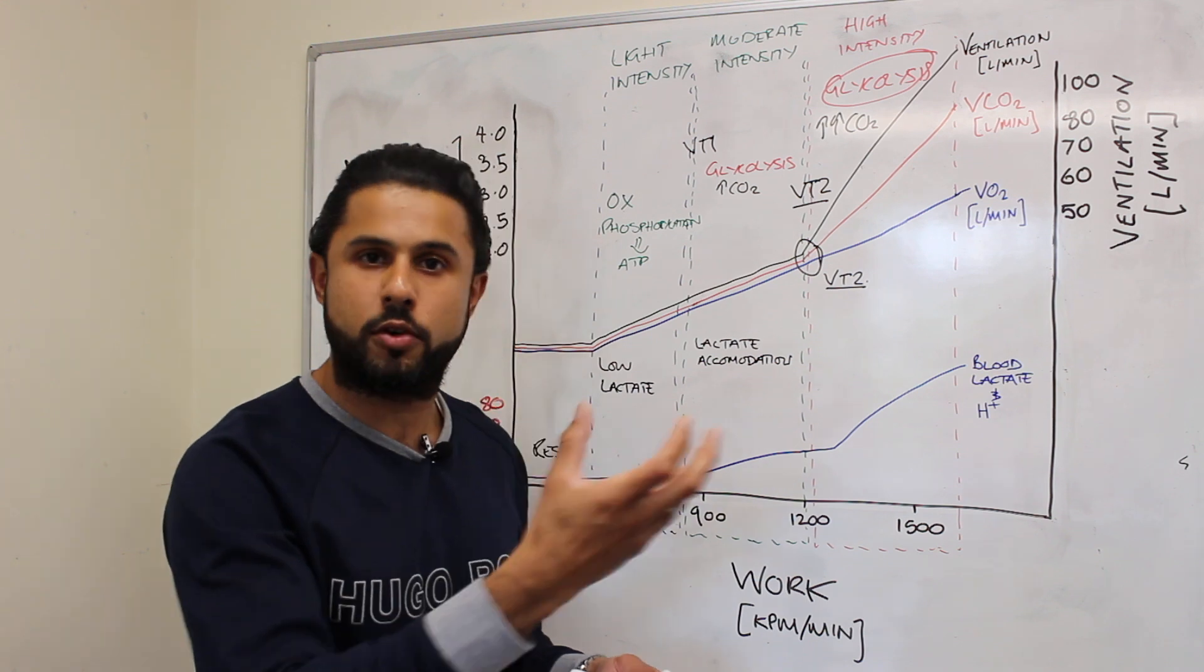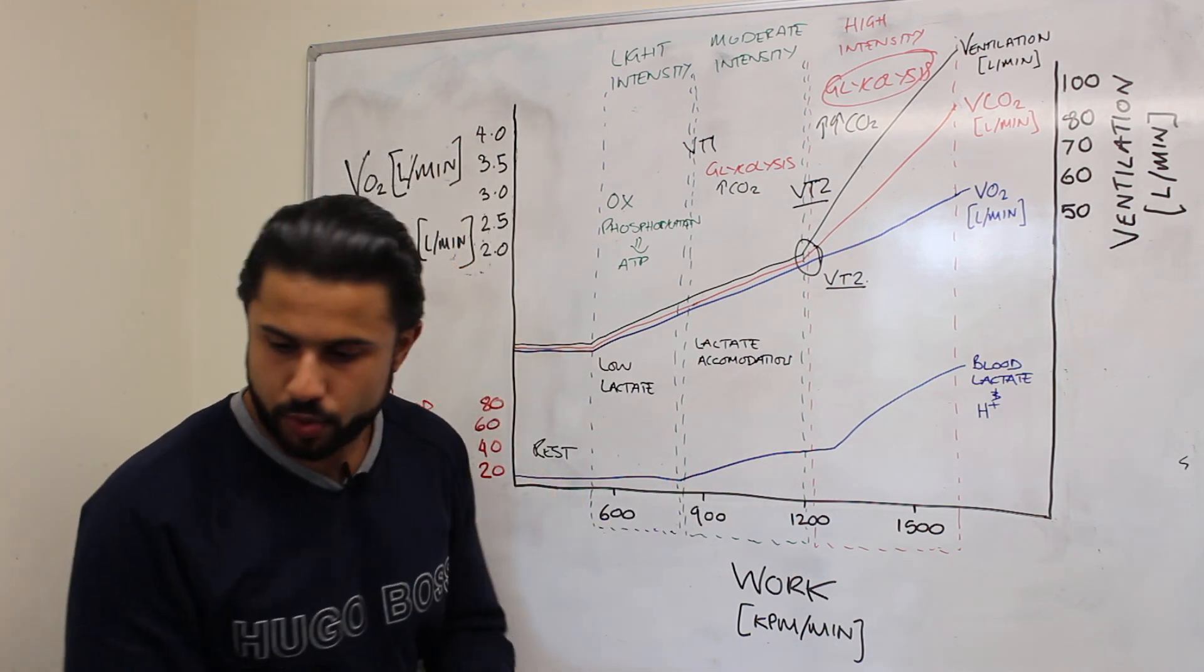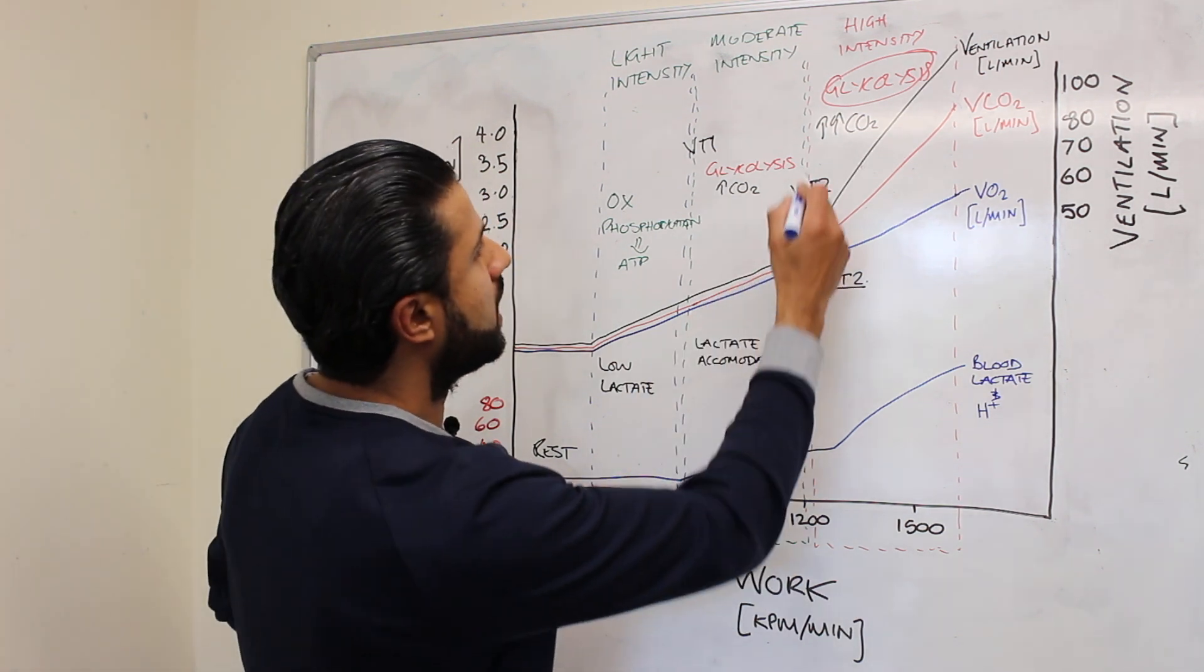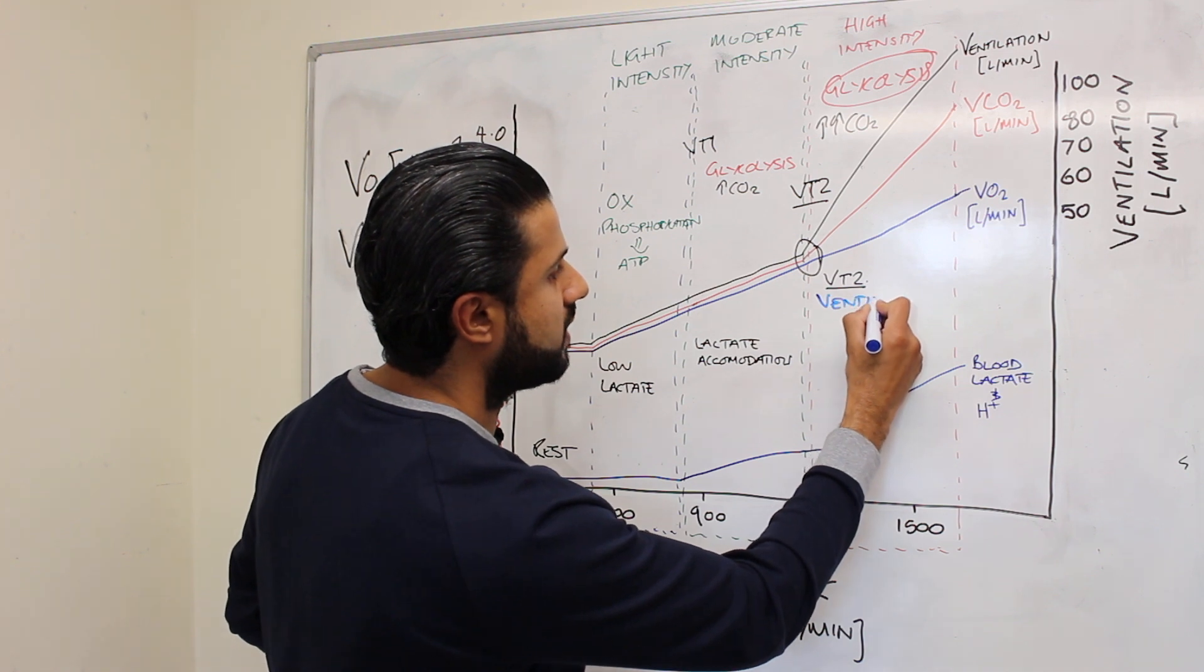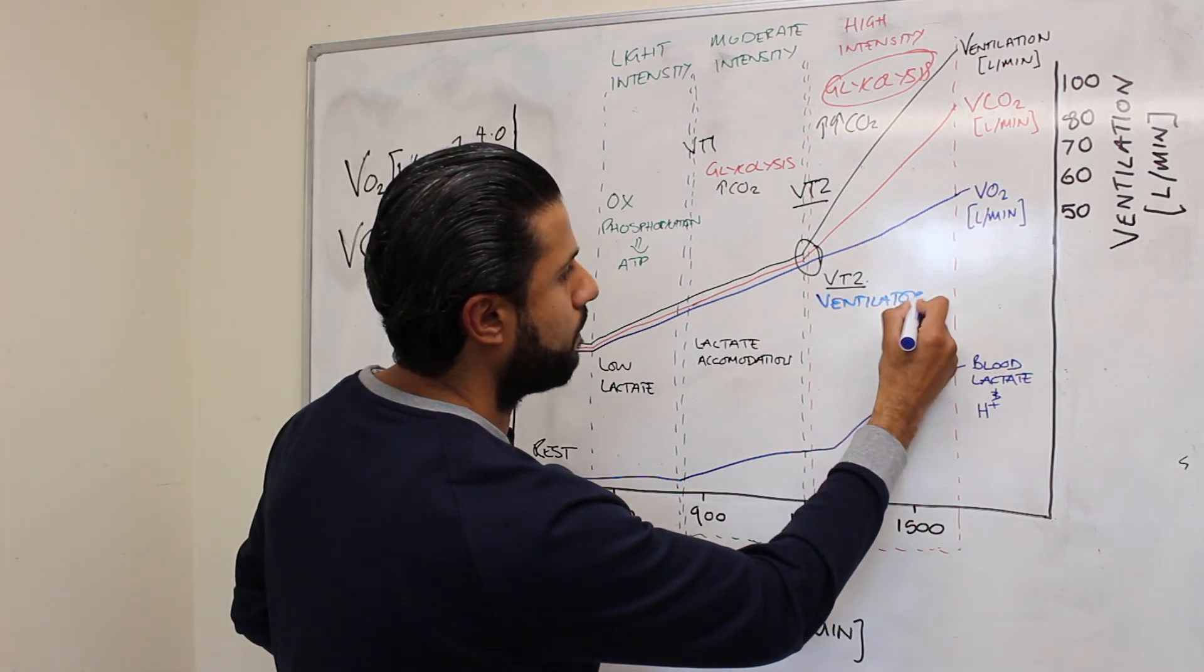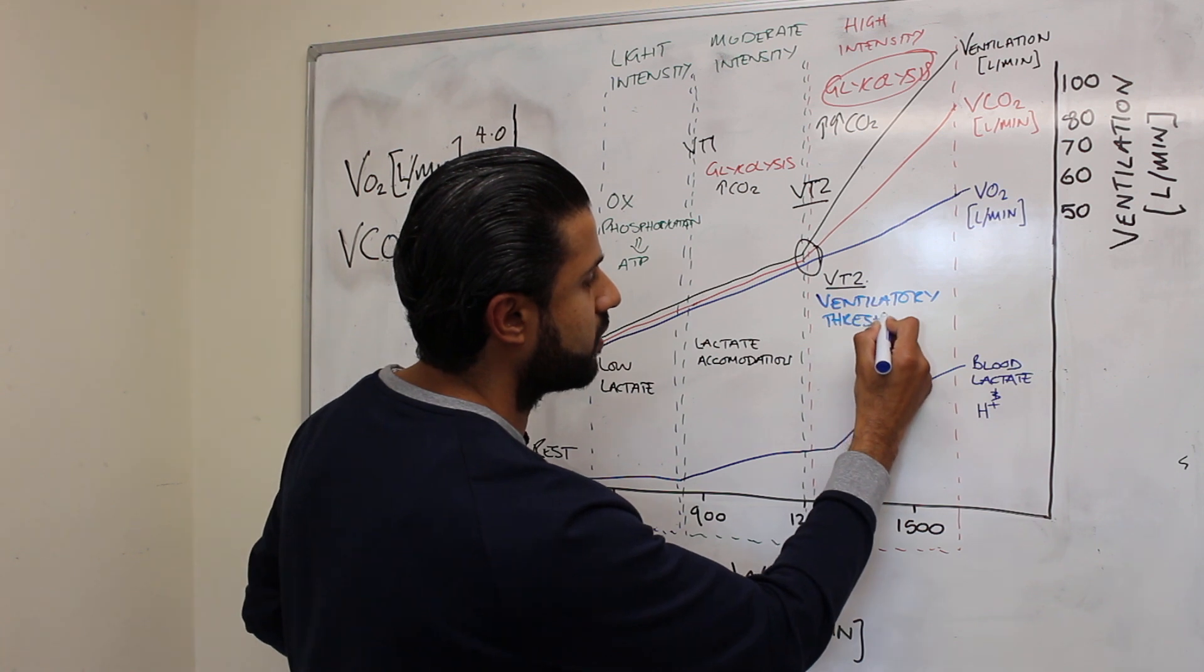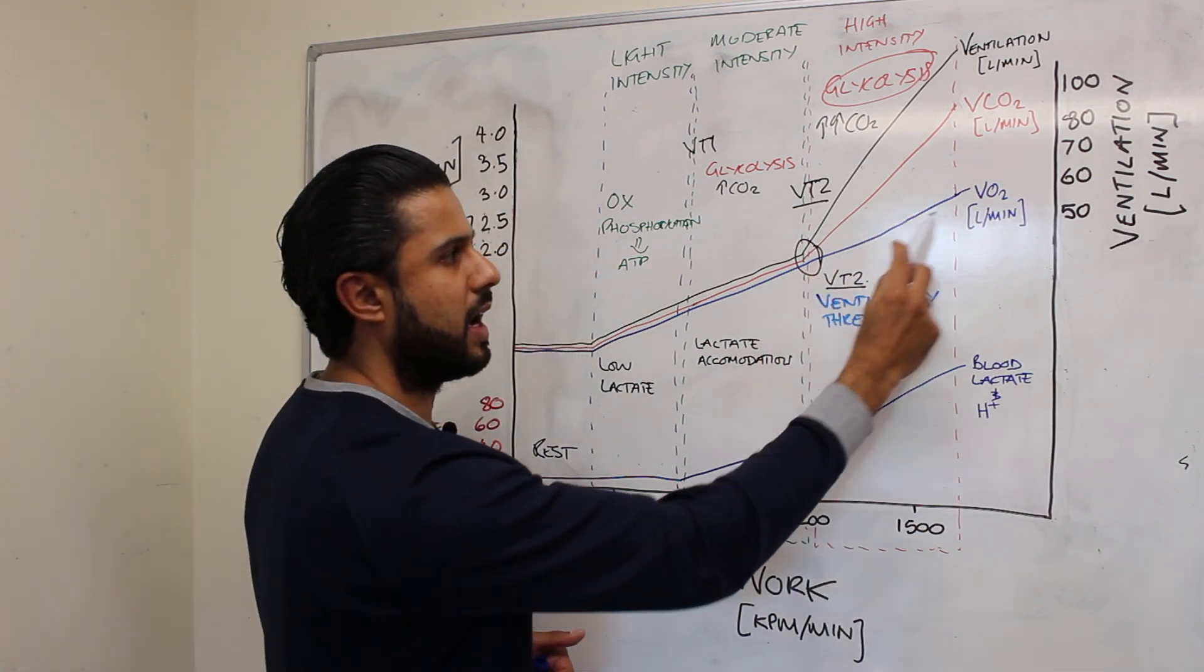Now at this point this VT2 point is the ventilatory threshold. This is the point where ventilation changes to match the need to get rid of CO2 and no longer reflects the oxygen consumption.